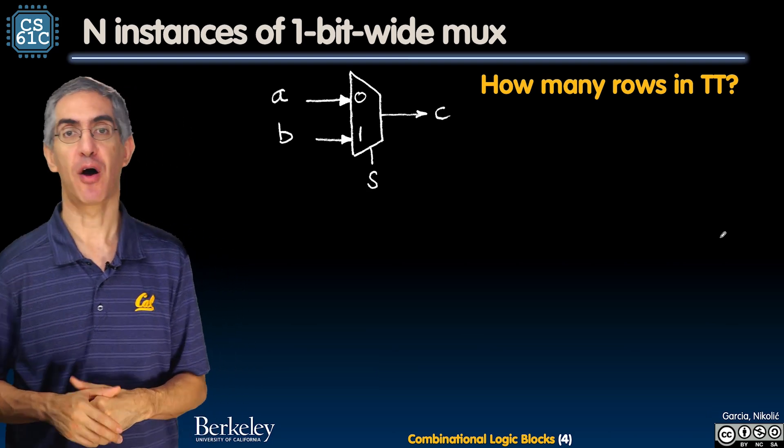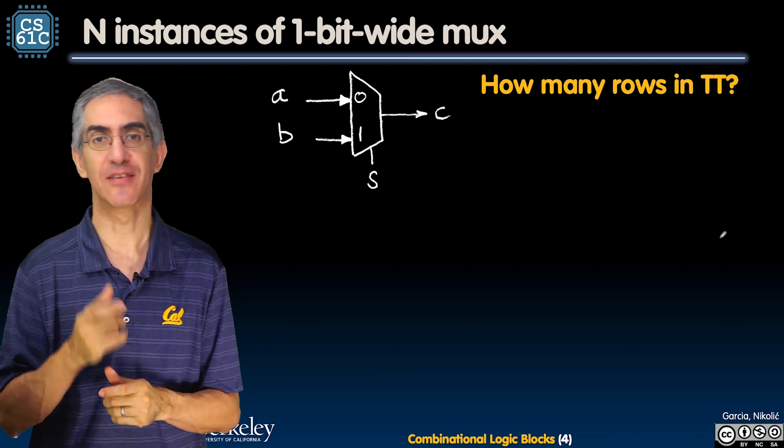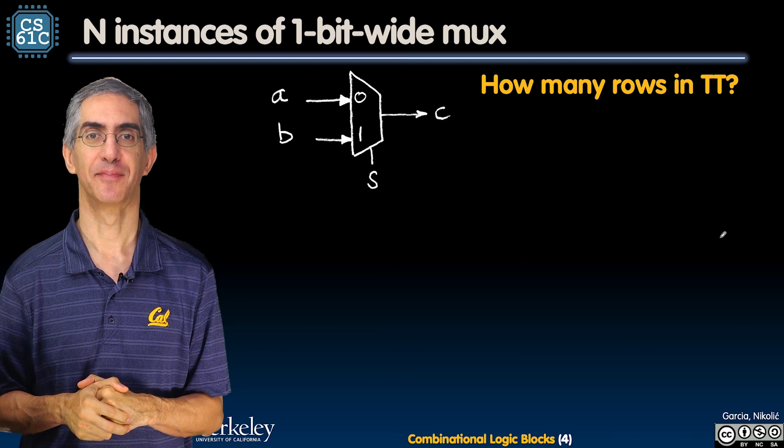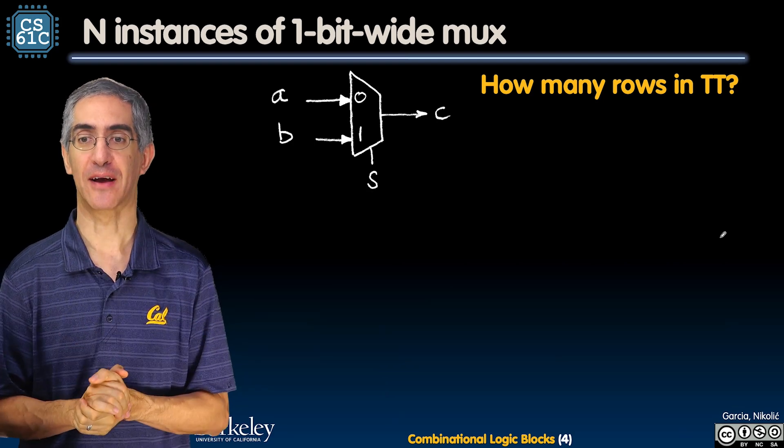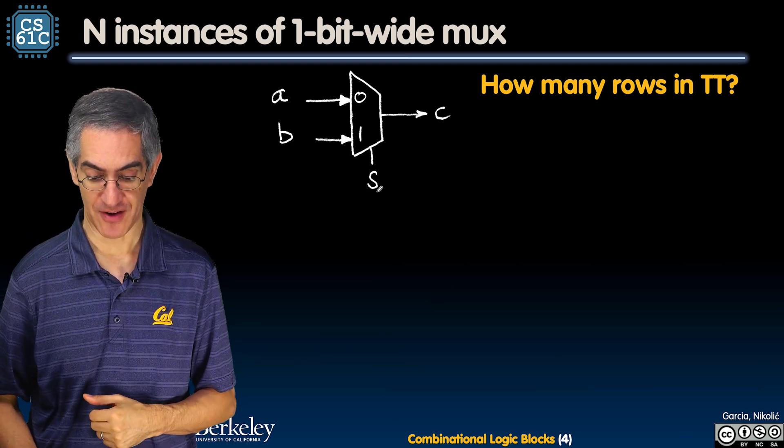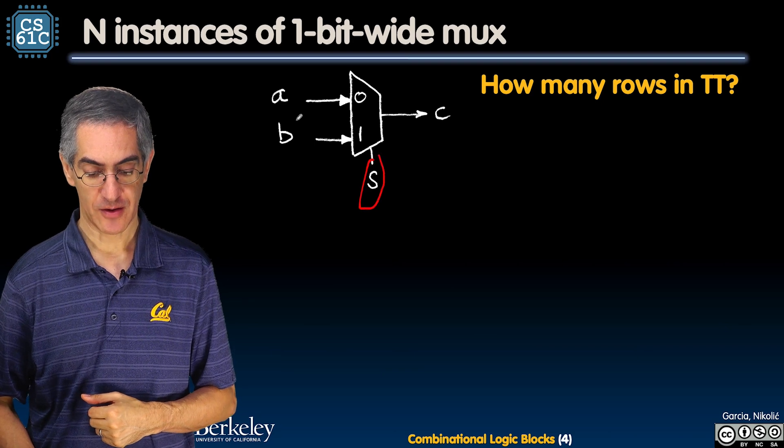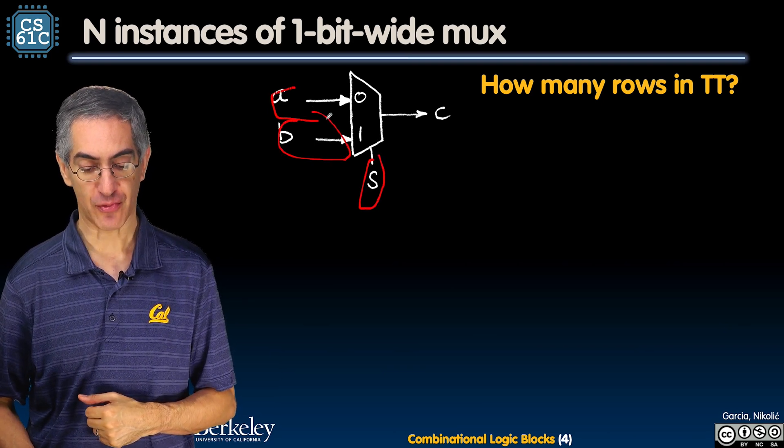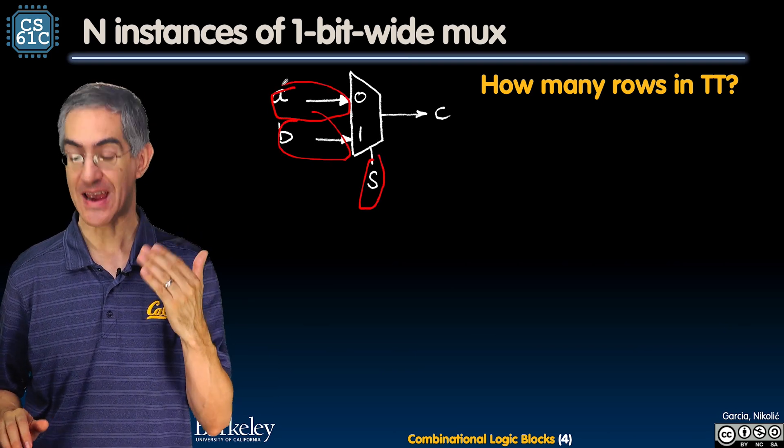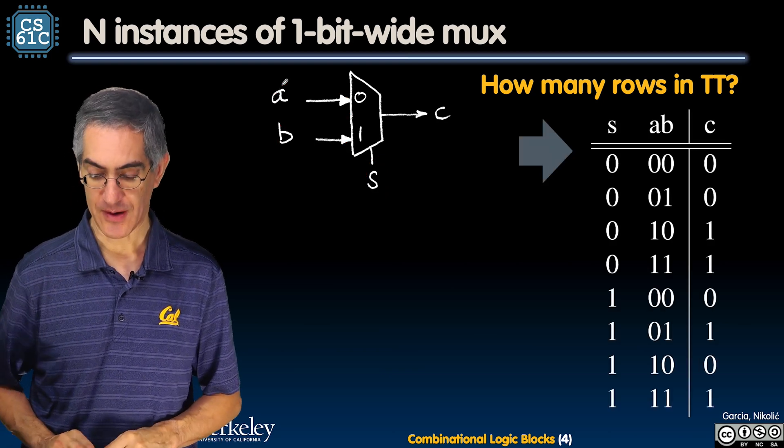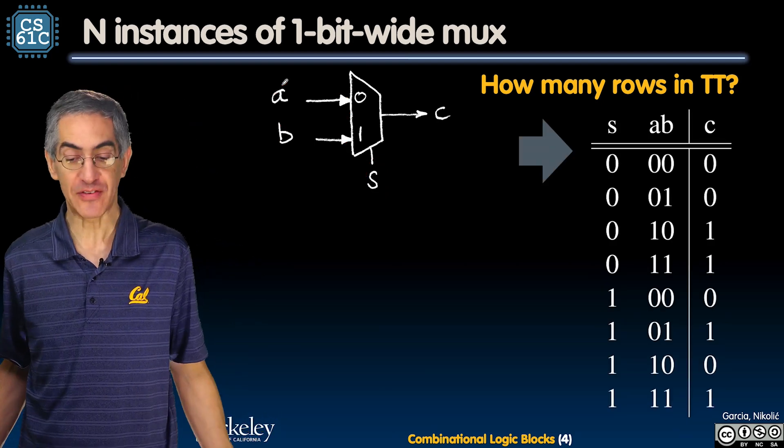So how many rows in this truth table? Pause for a second and see if you can figure out the answer. And I'll tell you in two seconds. All right, welcome back. Number of rows. How many inputs do I have? I'm counting 1, 2, 3. That's three inputs. Three bits is eight rows. There's my eight rows, which basically says the following.